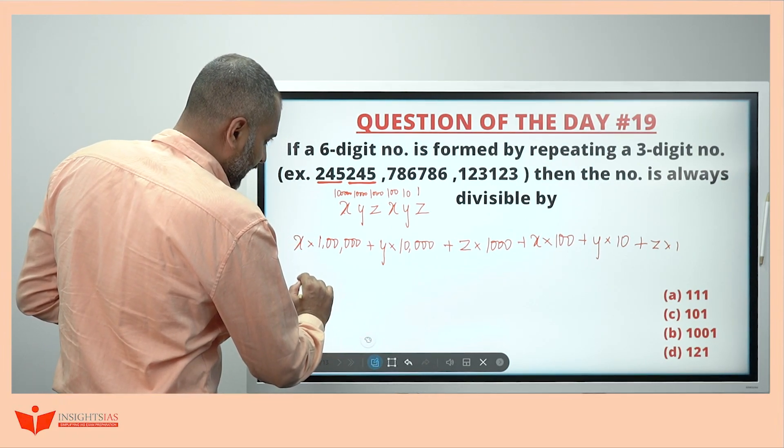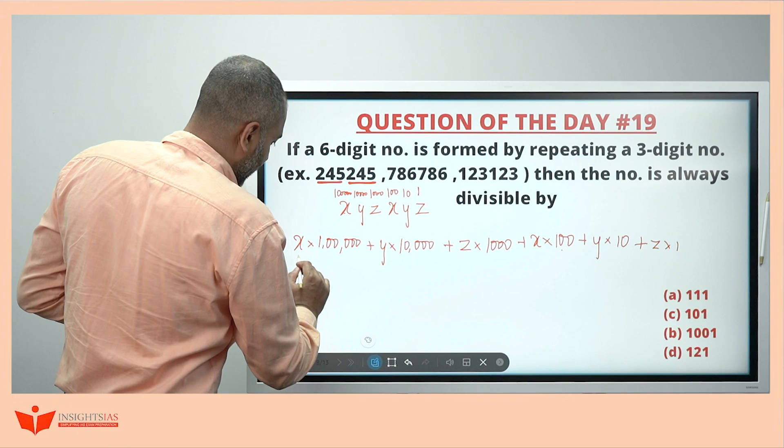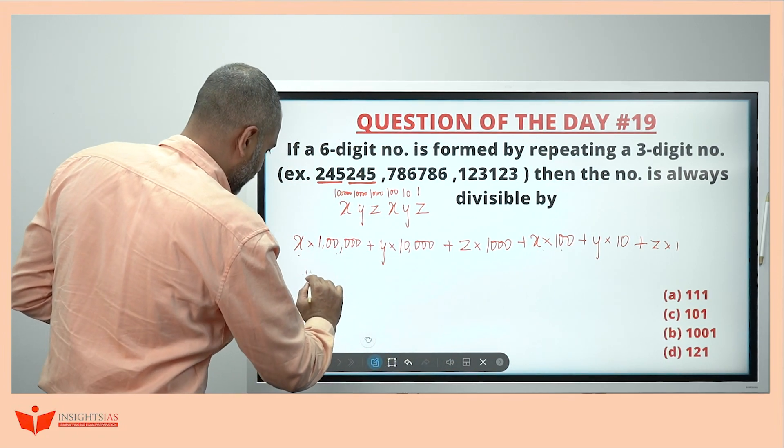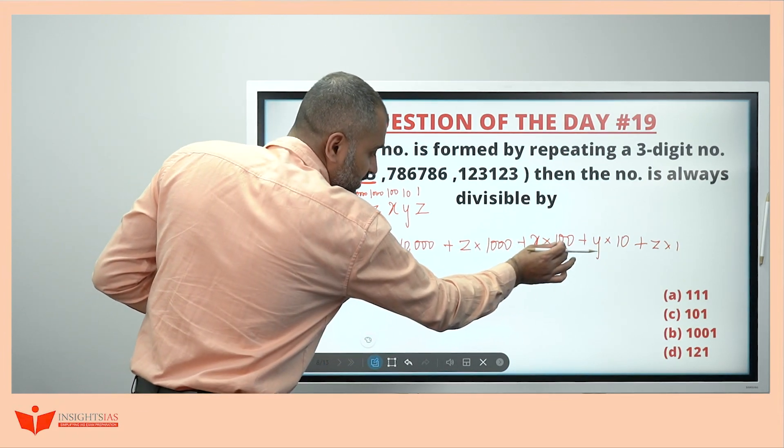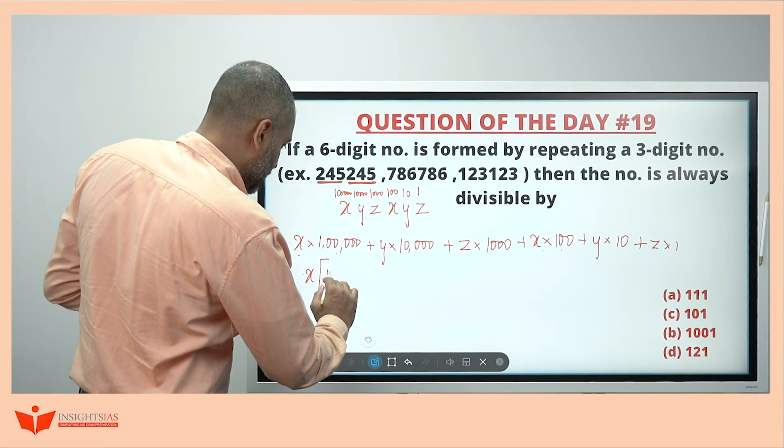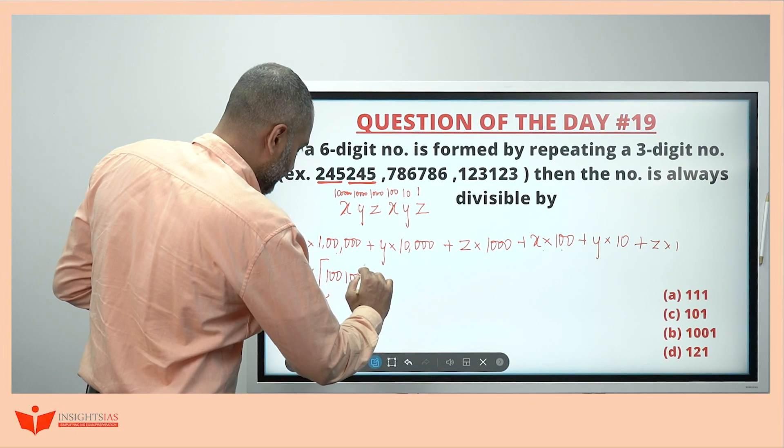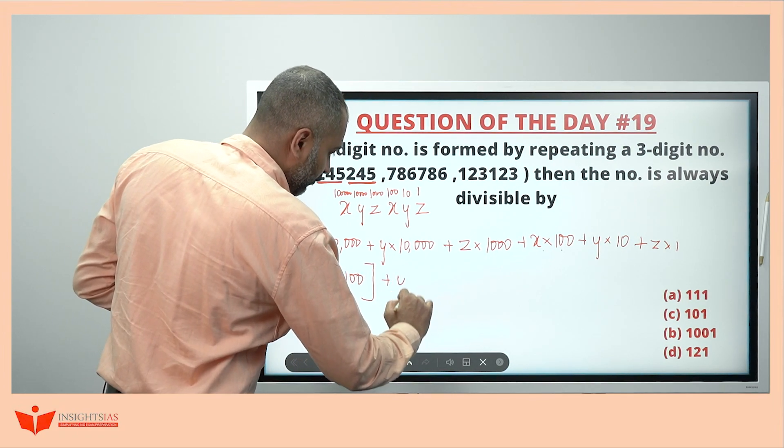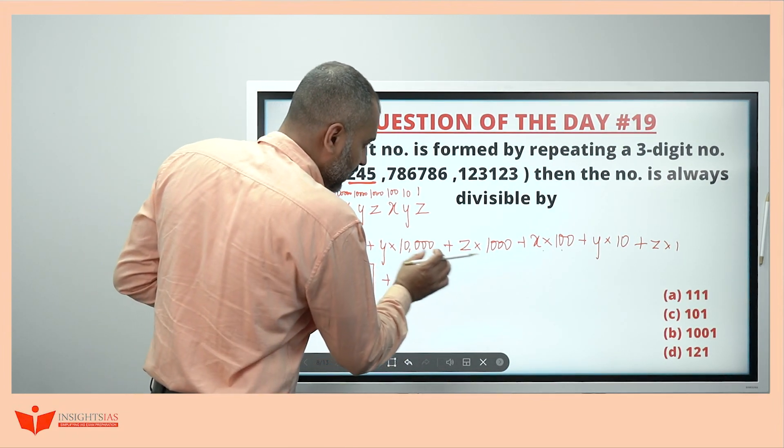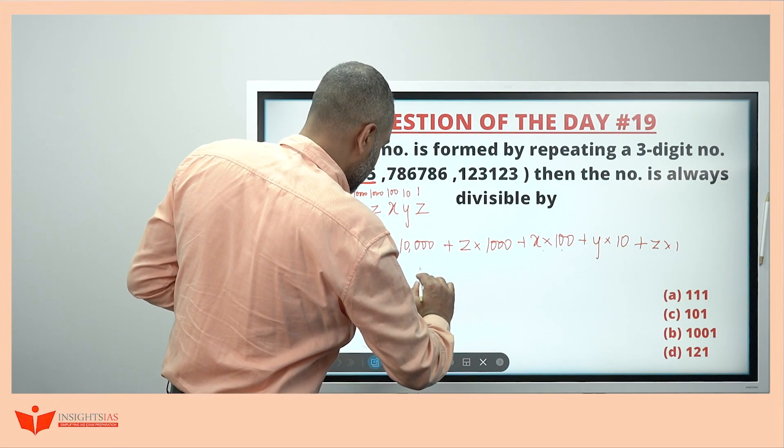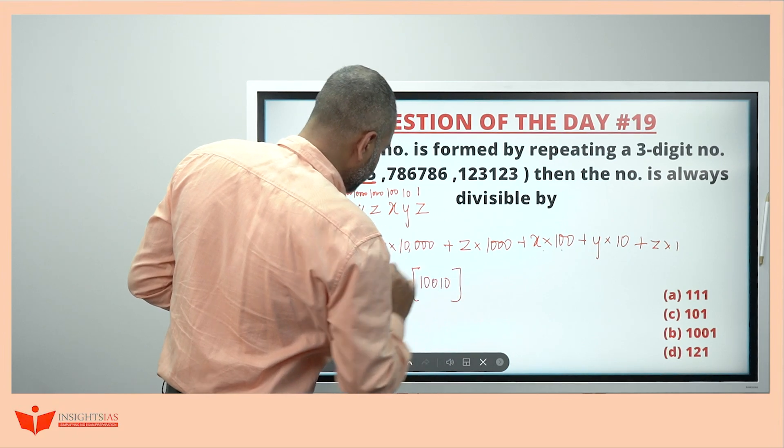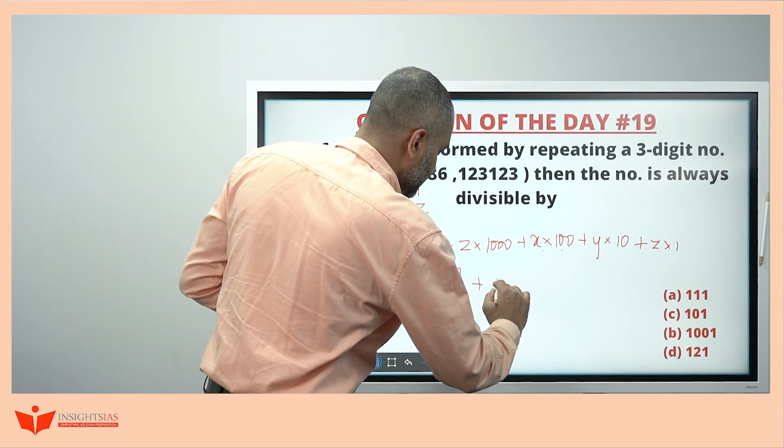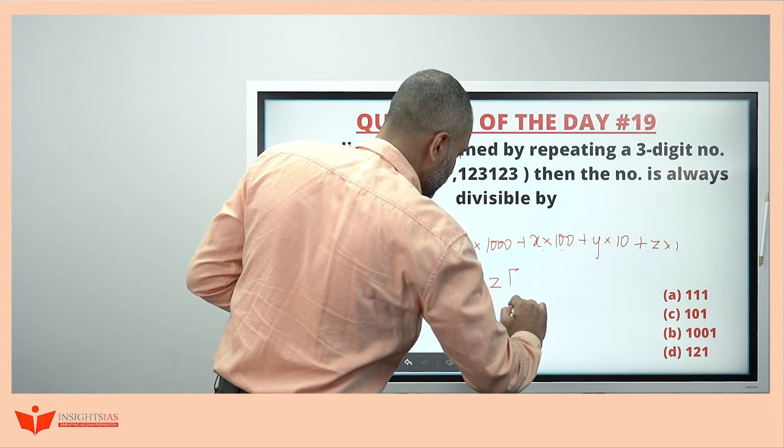See, if I take common x here, this is nothing but x 1 lakh and this is x 100. If I take common x here, this is 1 lakh and 100. So, this becomes 1 lakh and 100. And if I take y common similarly, this is 10,000 and 10. So, this becomes 10,000 and 10. Similarly z, this becomes 1001.